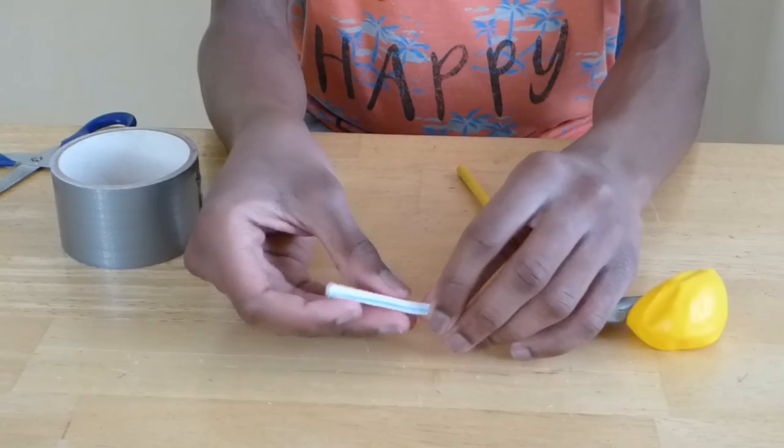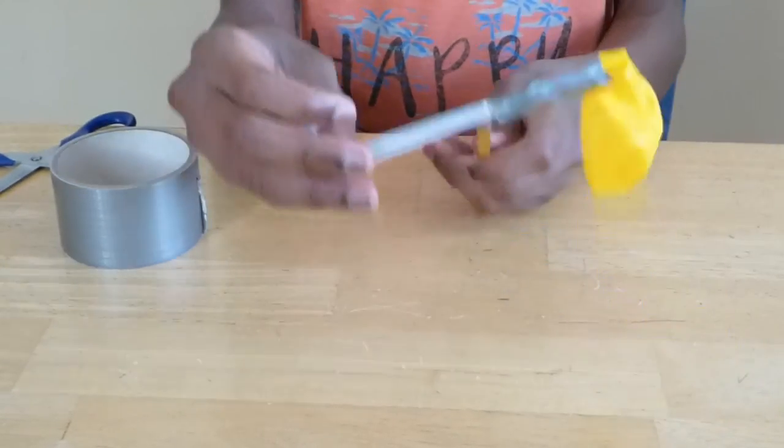Bend the short end of the straw and form a 90 degree angle between the long and short ends of the straw.